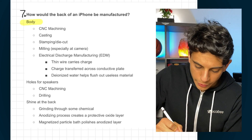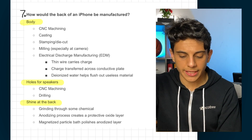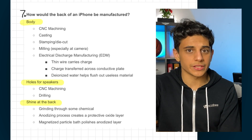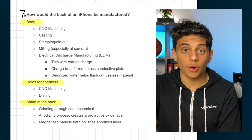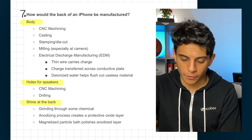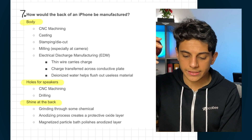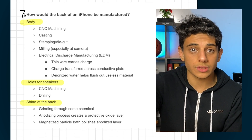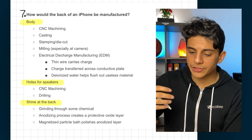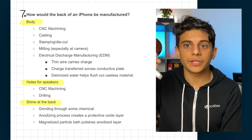The last question is: how would the back of an iPhone be manufactured? Break it down into three components: the body, the speaker holes, and the shine on the back. For the body, processes include CNC machining, casting, or milling — milling is especially important at the camera area because it requires more precision. For the speaker holes, you can use CNC machining or drilling. For the shine, you can use chemical grinding or an anodizing process to create a protective layer. These interview answers demonstrate basic understanding of mechanical engineering and manufacturing; there's a lot more detail in practice, but you don't have hours to discuss it.